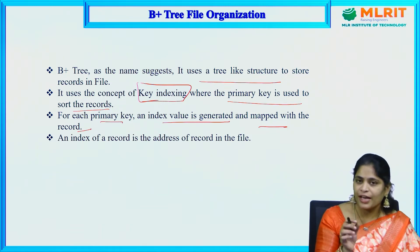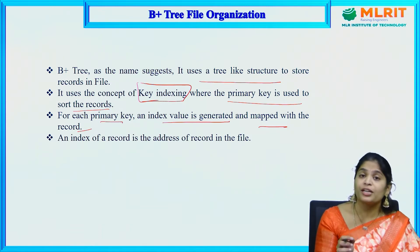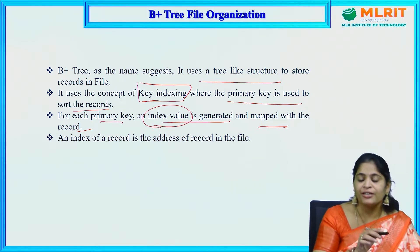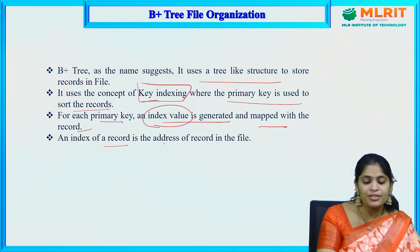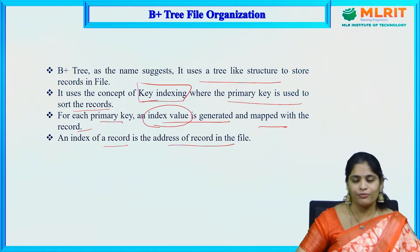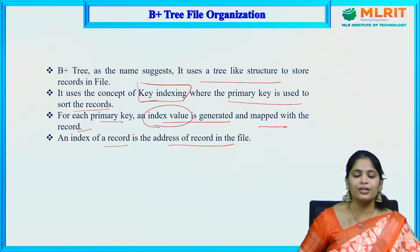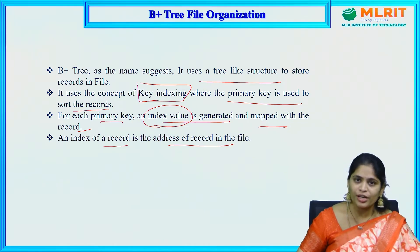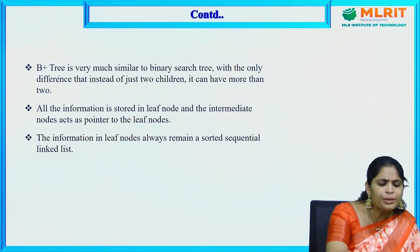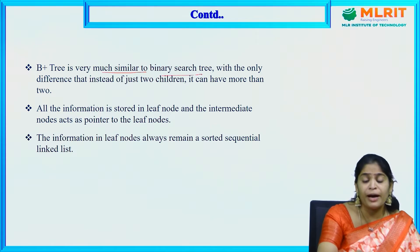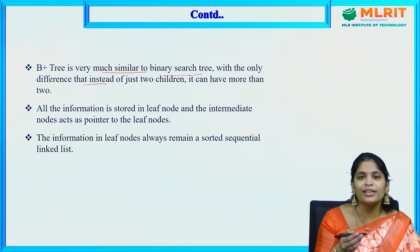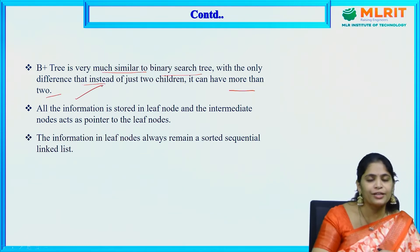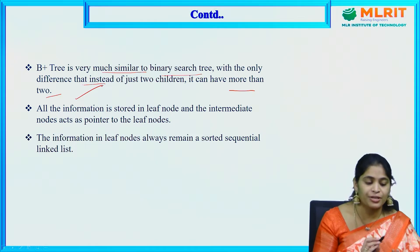For each primary key, an index value is generated and mapped with that particular record. An index of a record is the address of the record in the record file. So this is the basic introduction of B plus tree file organization — files and records are stored in a tree-like structure. B plus tree is very similar to BST, binary search tree, with the only difference that instead of only two children, it can have more than two.